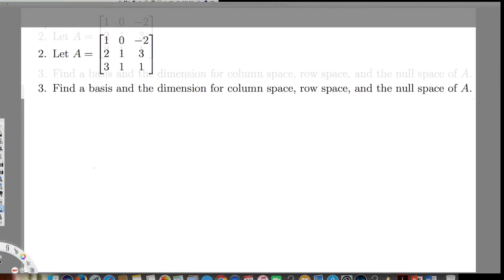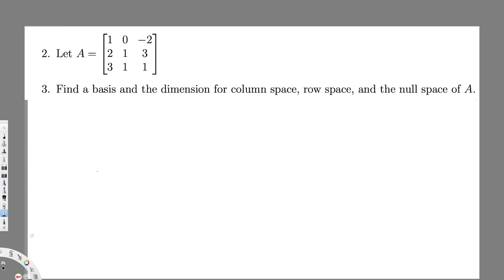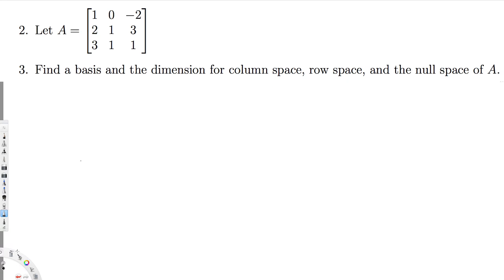Let's do this problem. The question asks us to find the basis and dimension for the column space, row space, and null space of matrix A. The first thing we have to do is find the Gauss-Jordan form, and then we can determine the column space, row space, and null space.